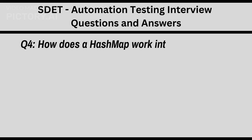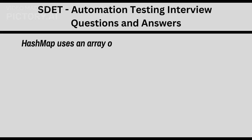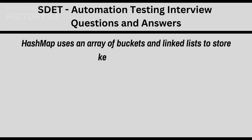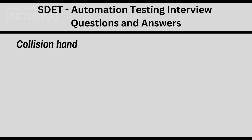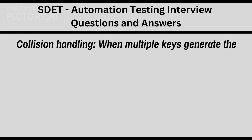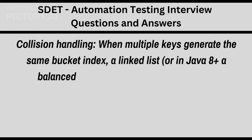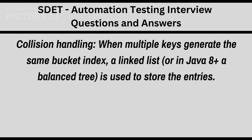Q4. How does a HashMap work internally in Java? The HashMap uses an array of buckets and linked lists to store key-value pairs. The hashCode method of the key generates a hash, which is used to determine the bucket. For collision handling, when multiple keys generate the same bucket index, a linked list — or in Java 8+, a balanced tree — is used to store the entries.